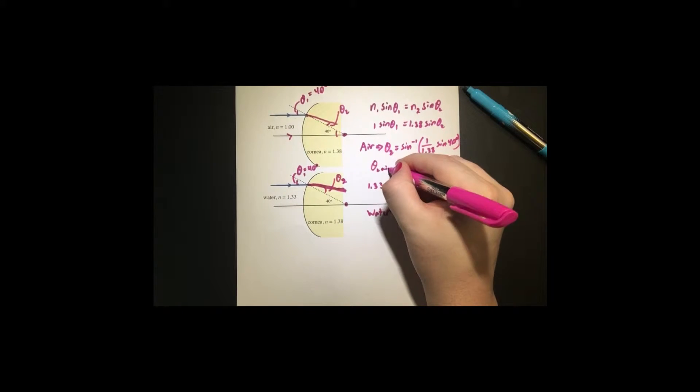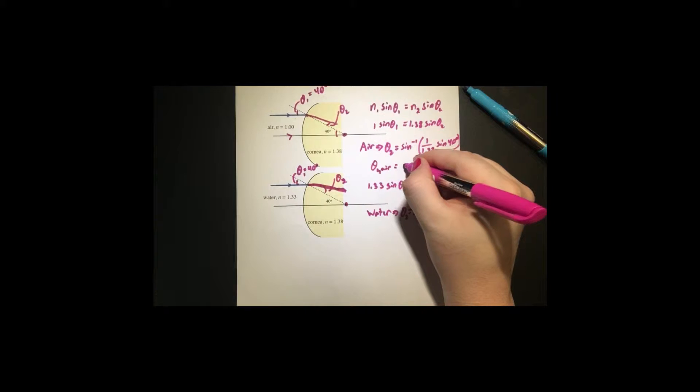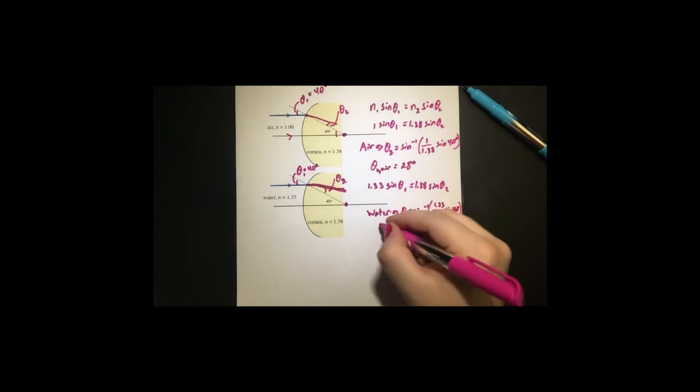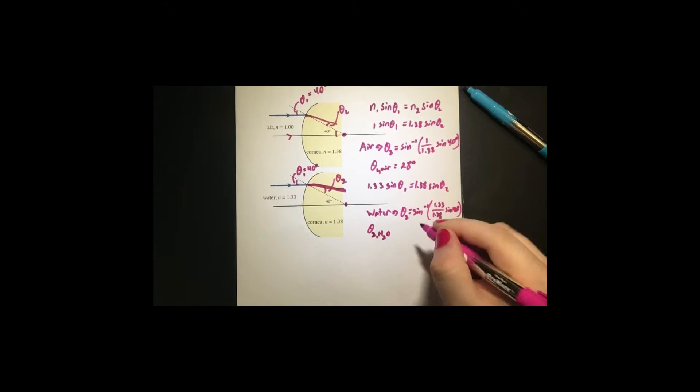So if I plug these into a calculator, theta 2 for air is about 28 degrees and theta 2 for water, H2O, is about 38 degrees.